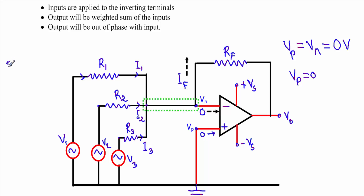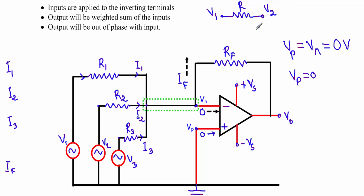Now how do we calculate the currents I1, I2, I3, and IF? If we have a resistance R, at one end it has voltage V1 and at the other end it has voltage V2, and current I is flowing from V2 towards V1. We apply Ohm's law: current equals voltage difference divided by resistance. Current flows from higher potential to lower potential, so I equals V2 minus V1 divided by R.